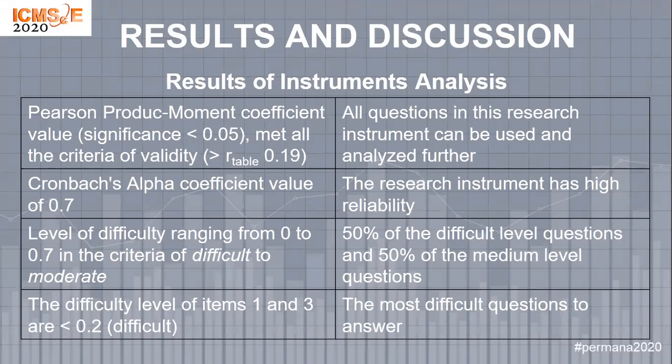Results of instrument test analysis. Based on the statistical test, all questions in this research instrument can be used and analyzed further, because the correlation test's Pearson product-moment coefficient values met all the criteria of validity, above 0.19 of the r-table. Based on the Cronbach's alpha coefficient value of 0.7, the research instrument has higher reliability. The result of the difficulty level test empirically varies in the criteria of difficult to moderate, ranging from 0 to 0.7. The difficulty level of items 1 and 3 are the most difficult, less than 0.20.